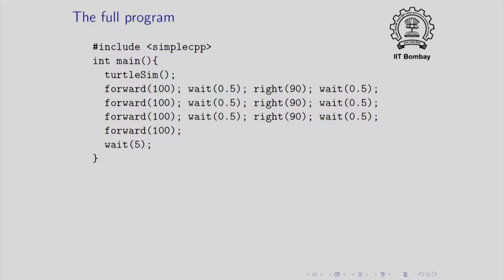The full program that I am going to show you running is actually slightly different. So let me show that to you now. The first line here says include simple CPP. This just includes a header file called simple CPP. This causes the graphics functionality to be included. Then you have the main program the first line of which is turtle sim. This creates the graphics window or what we call the graphics canvas with the turtle inside it. Now the rest of the program is really similar to what I wrote. So I have forward and right.